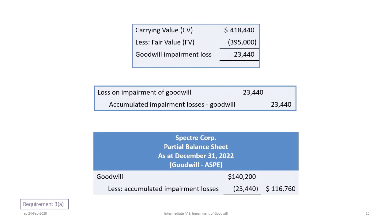To summarize on the balance sheet under non-current assets, goodwill has an original value of $140,200 — calculated in tutorial 24a — less accumulated impairment losses of $23,440, leaving a carrying value for goodwill of $116,760.